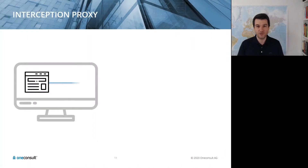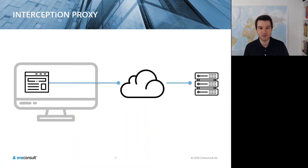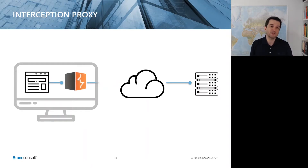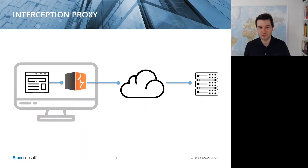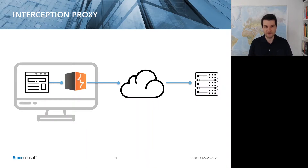For dynamic application security testing, the classical approach is where a single page application talks via the cloud to different APIs. As an attacker, you insert an interception proxy such as Burp or the open source OWASP ZAP and can now manipulate requests made by the application, as well as view and manipulate responses sent back by the API server.